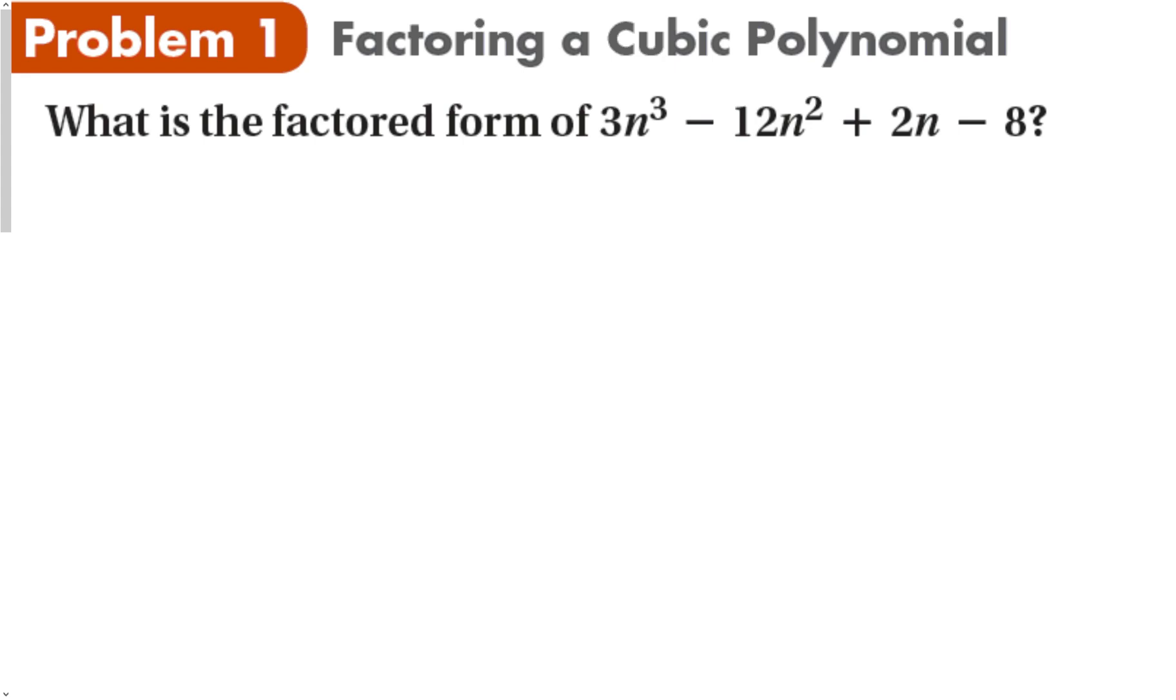Just like we did before, we're going to look at these first two terms, and we're going to say, what do those two terms have in common? Well, both of them have a 3n squared. And if we factor that out, we're left with just an n minus 4.